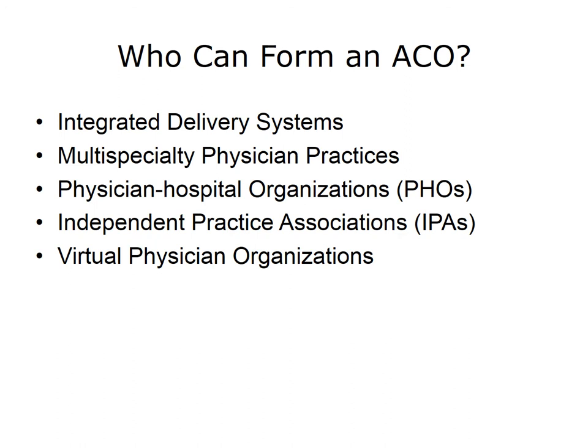What types of organizations can form an ACO? There are at least five types: Integrated Delivery Systems, Multi-Specialty Physician Practices, Physician Hospital Organizations or PHOs, Independent Practice Associations or IPAs, and Virtual Physician Organizations. We will next describe the characteristics of each of these types of organizations, particularly the areas that might be helpful for success as an ACO.